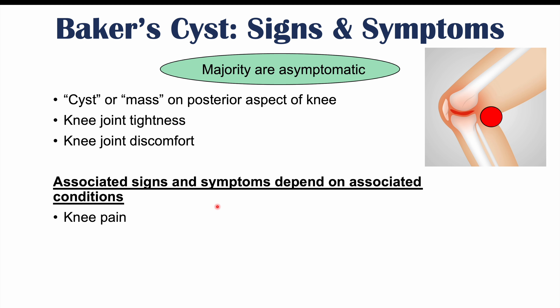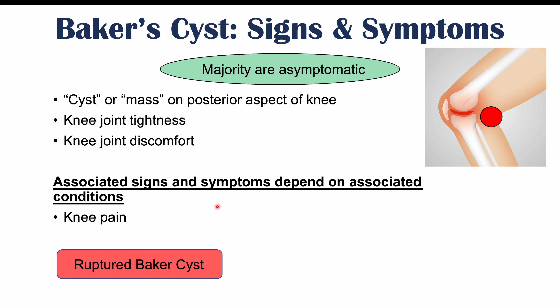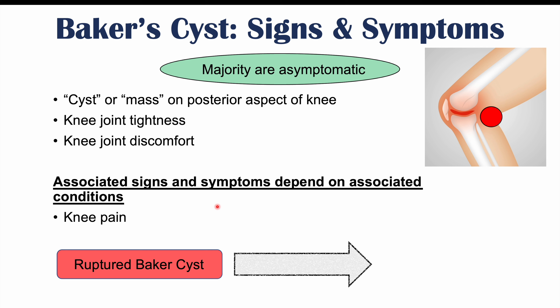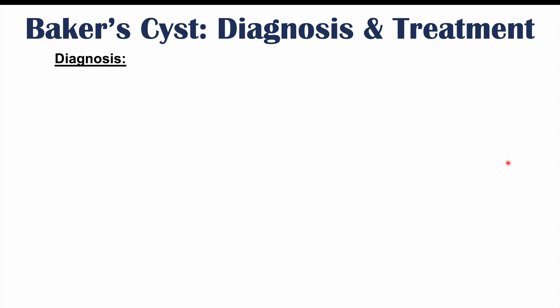There are other associated signs and symptoms depending on associated conditions. There can be knee pain if there is joint degeneration due to rheumatoid arthritis or knee osteoarthritis. In some patients, rupturing of the cyst can occur — that ball of fluid can burst, leading to swelling of the leg. This can actually appear like a deep vein thrombosis or DVT, because the fluid extends into the interstitial areas around the knee and leg. A unilaterally swollen leg is a red flag for DVT, but in this case it's actually a ruptured Baker's cyst.